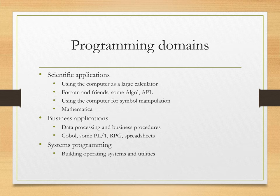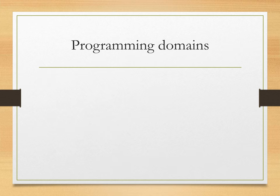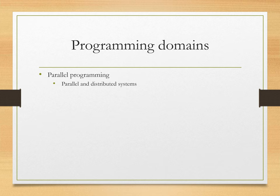The next application is systems programming — building operating systems and utilities. It's basically the core things that run computers, which are themselves built upon code. Some languages for this include C, Espol, Bliss, and others. Parallel programming is also another use — the idea being that you're running code on multiple computers, with parallel and distributed systems. Some languages that support this are AIDA, CSP, Modula DP, Menta, and Legion.